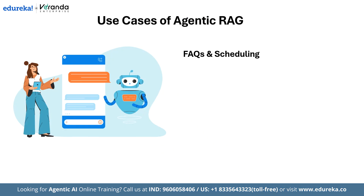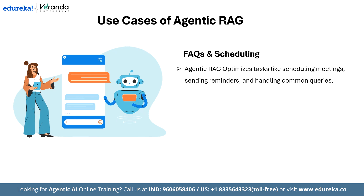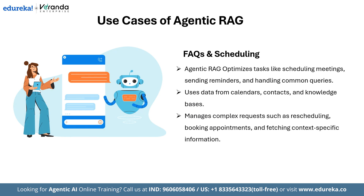In FAQ and Scheduling, Agentic RAG excels at optimizing tasks such as scheduling meetings, sending reminders, or responding to common inquiries. By utilizing various data sources including calendars, contact lists, and knowledge bases, it effectively manages intricate requests like rescheduling meetings, arranging appointments, or retrieving information based on context.